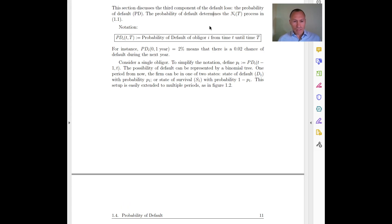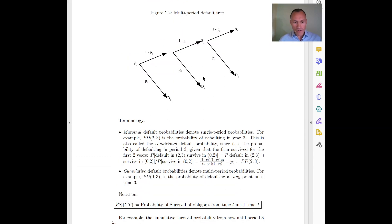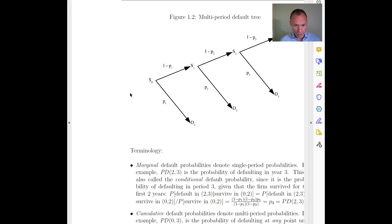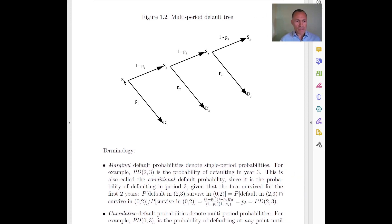The probability of default is what its name suggests. I will typically use a given horizon, say one year. If I say the probability of default is two percent, it means there is a two percent chance of the obligor defaulting within the next year. It will be very useful to extend this over time — say from one year to three years — using a tree. Today we are in a state of survival at time zero. One year from now we can be in one of two states: in default with probability P1 (the probability over the first year), or alive in survival with the remaining probability one minus P1.